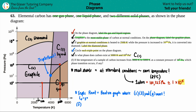We start at the solid (graphite) at 3000 K and end in the gas at 5000 K. A phase transition directly from solid to gas is always sublimation, so the phase transition that occurs is sublimation.